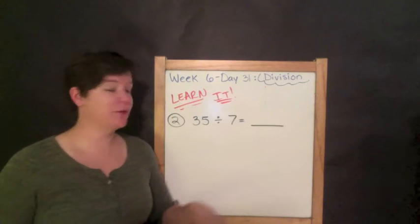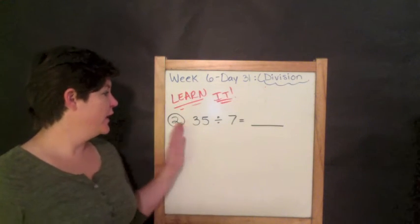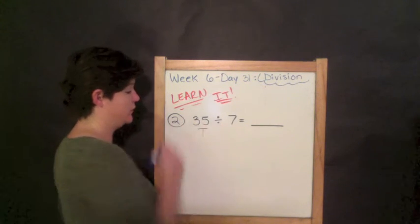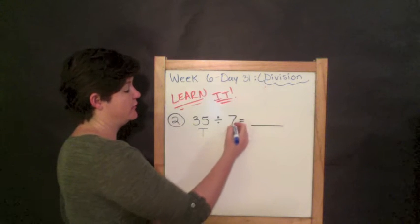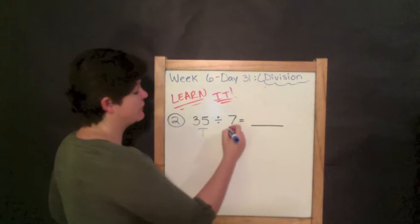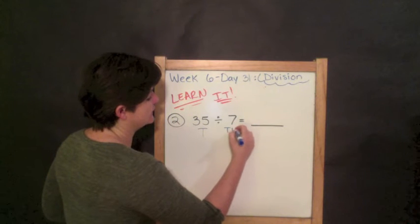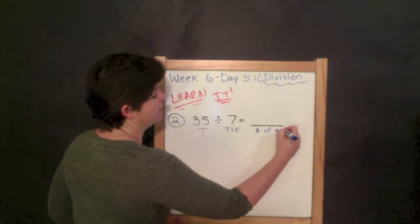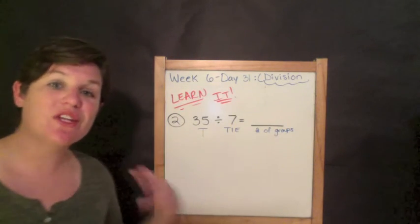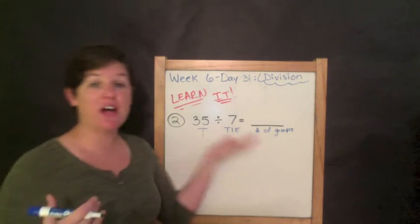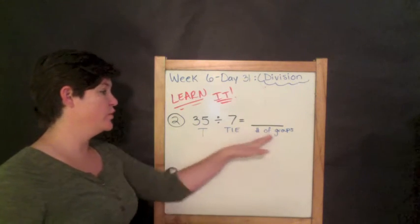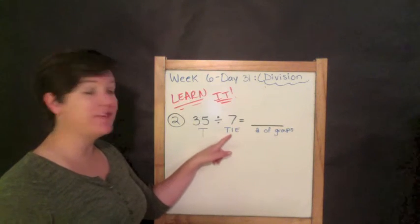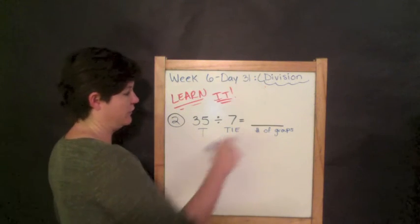Alright, folks, we're on number 2 for the Learn It section now. We've got 35 as our dividend. It's also our total amount. Divided by our divisor, 7. And this time I'm going to choose for 7 to be the things in each, which means we would be looking for the number of groups. I'm flip-flopping what I did last time. Because for division, we can choose when we don't have a context, and we don't have a situation telling us which one is which. So I've got 35 things total, and there's 7 in each.